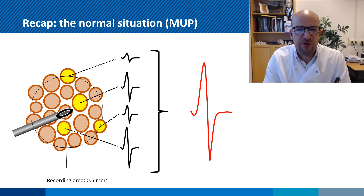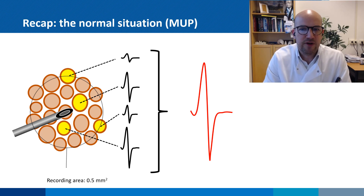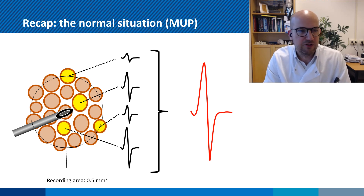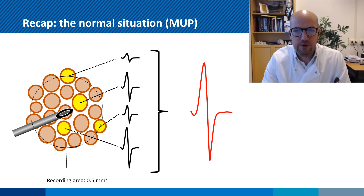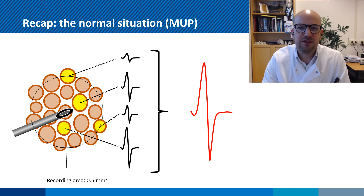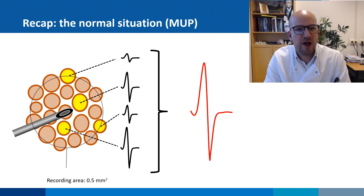When we assess them we can measure a number of things: its duration, its amplitude, and the number of phases. For all these parameters we broadly have the following reference values: no longer than 50 milliseconds, no larger than 2 millivolts, and no more than 4 phases.